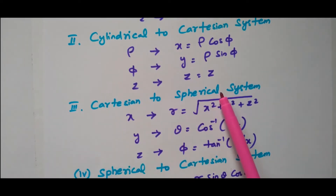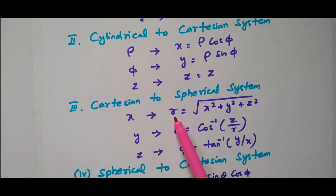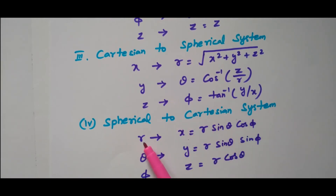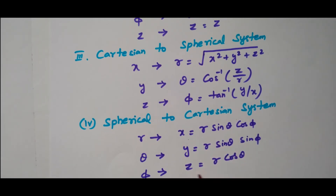For Cartesian to spherical transformation — converting x, y, z to r, θ, φ: r = √(x² + y² + z²), θ = cos⁻¹(z/r), and φ = tan⁻¹(y/x). For spherical to Cartesian: x = r·sinθ·cosφ, y = r·sinθ·sinφ, z = r·cosθ. So by using these formulas, r, θ, φ can be converted into x, y, z for further simplification and calculation. Equivalent formulas are available for all transformations.